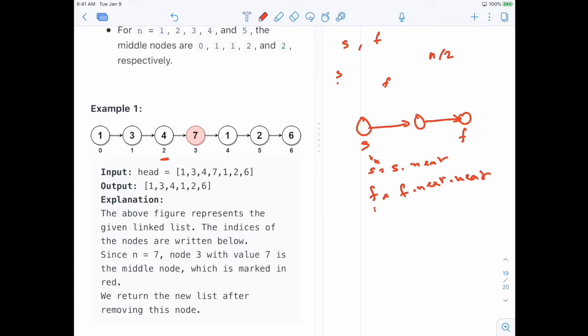So s would be here, and fast would be here. But if you stop here, s would be right at the middle if you stop when f is done. So let me show you an example on this linked list here.